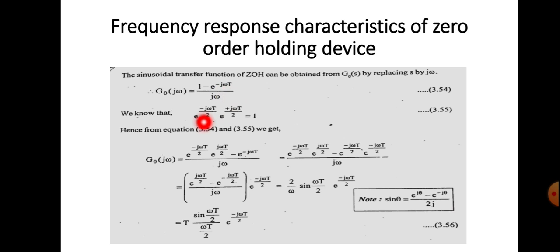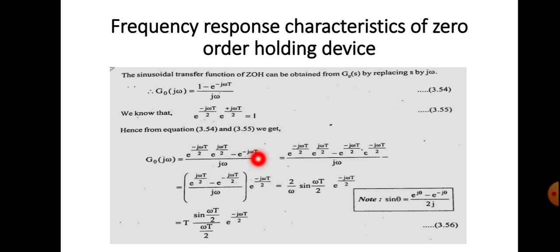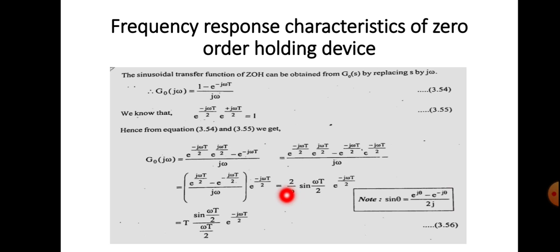We can write G₀(jω) = (1 - e^(-jωT))/jω. Here you can use an identity: e^(-jωT/2) · e^(+jωT/2) = 1. So instead of 1 you substitute this relation. Then you can take e^(-jωT/2) outside. We know the relation (e^(jθ) - e^(-jθ))/2j = sin θ, and using that, it becomes (2/ω) · sin(ωT/2) · e^(-jωT/2).